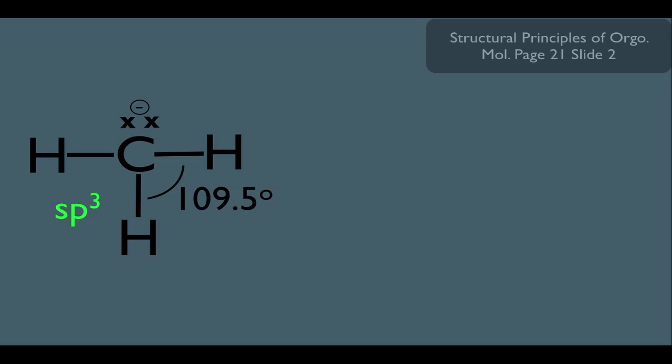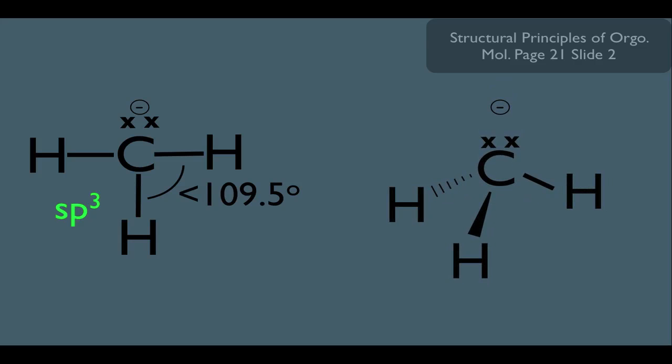However, remember the concept here, lone pair electrons take up more space, so the electrons on top of him are going to push down on those bonds, which means the bond angles are going to be slightly less than 109.5, which means this happens to be the actual geometry of a methyl anion.